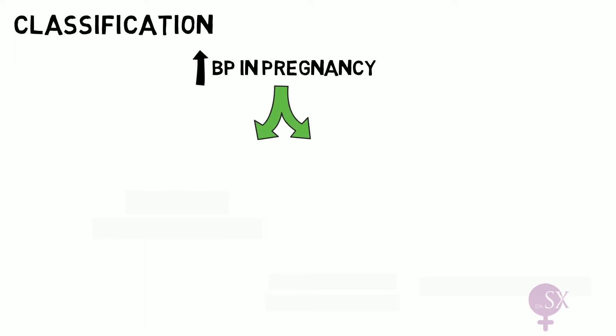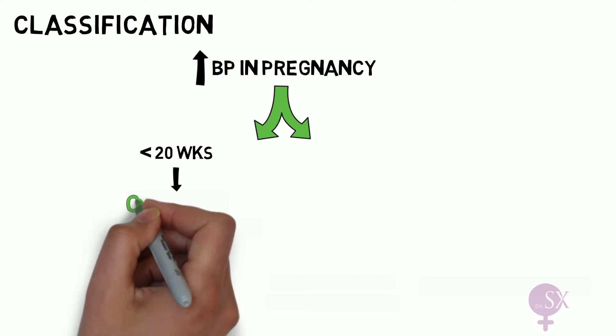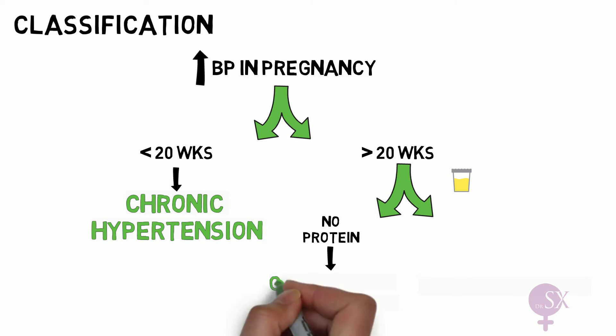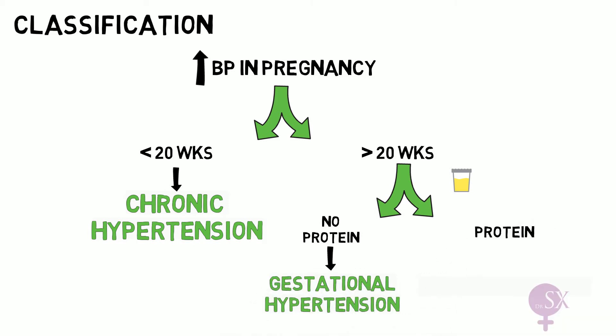When we identify high blood pressure in pregnancy, we need to classify the condition based on the stage of pregnancy. High blood pressure before 20 weeks gestation is classified as chronic hypertension — the patient had high blood pressure irrespective of the pregnancy. If high blood pressure is found after 20 weeks, we check for proteinuria: if absent, this is gestational hypertension; if protein is present, this is preeclampsia. The key difference is that gestational hypertension has no systemic effects, while preeclampsia is a multi-system disease.